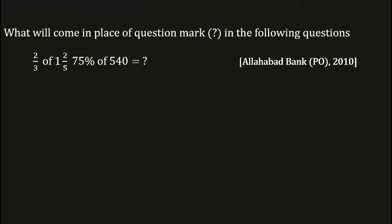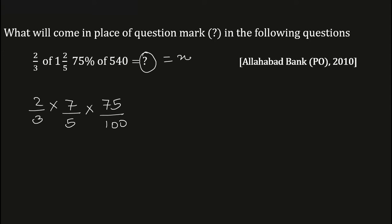See the example: 2/3 of 1 2/5 × 75% of 540 is equal to question mark. In place of question mark, consider it as equal to x. Now 2/3 × 7/5 × 75/100 × 540 is equal to x. Now solve this one.